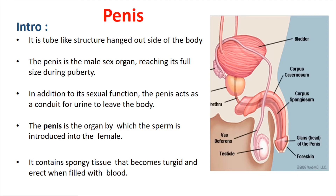The penis is the organ by which sperm is introduced into the female — ejaculation of semen or sperm into the vagina. So the first function is to conduct urine from the body to the outside, and the second is to ejaculate sperm into the female. It contains spongy tissue that becomes turgid and erect when filled with blood.